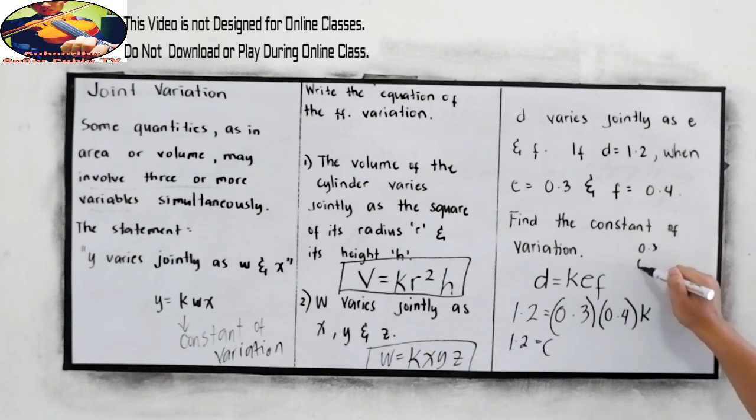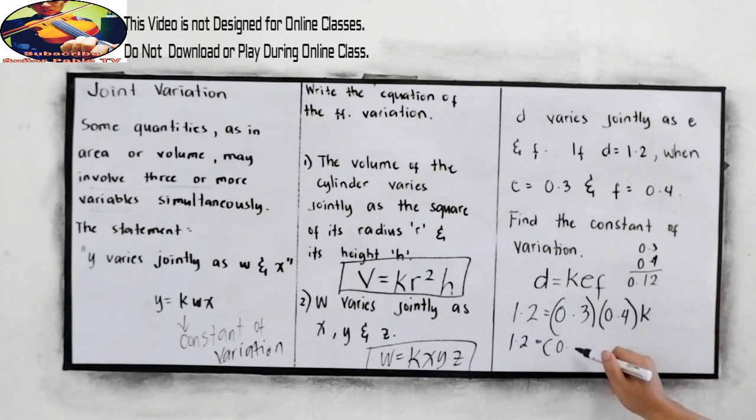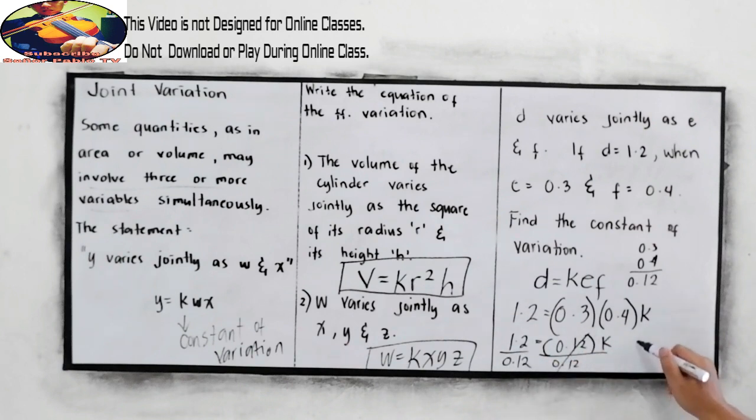0.3 times 0.4, so 4 times 3 equals 12. How many decimal places? Two. So 0.12 times k. Now divide by 0.12. Our k is equal to 1.2 divided by 0.12. That will give us 10. So the constant of variation is k equals 10.